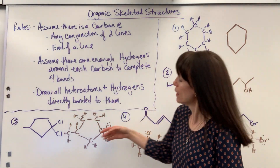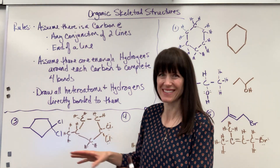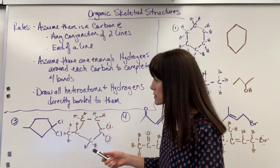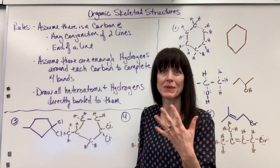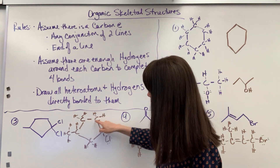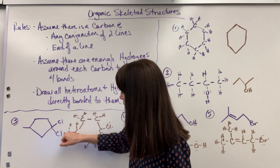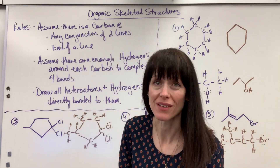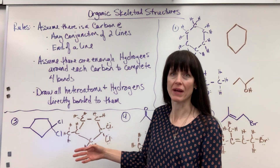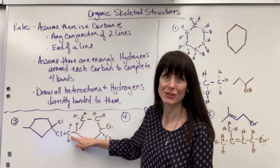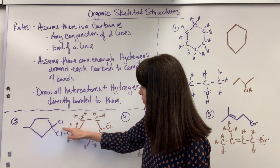Let's do number three — we have both heteroatoms, a cyclical ring, and then a straight line. I start with the cyclical part. I can see there are five carbons because there are five conjunctions, so I draw five carbons and connect them all. I have one carbon attached at the end of the line extending from the ring. This end carbon needs three more hydrogens to have four bonds — it only has one bond to the adjacent carbon, so there are three hydrogens to make a total of four bonds.